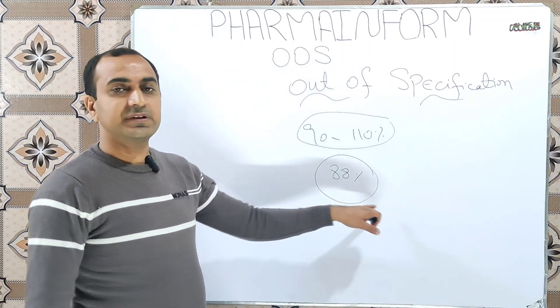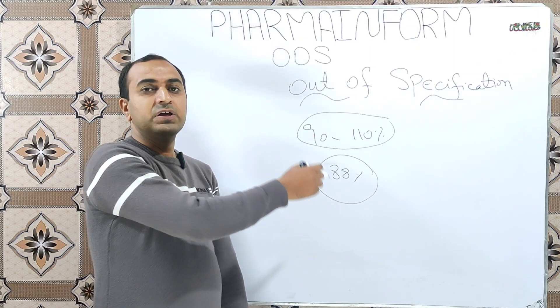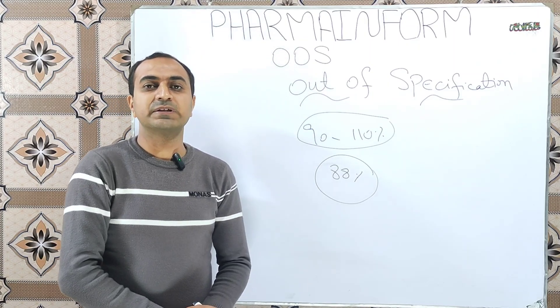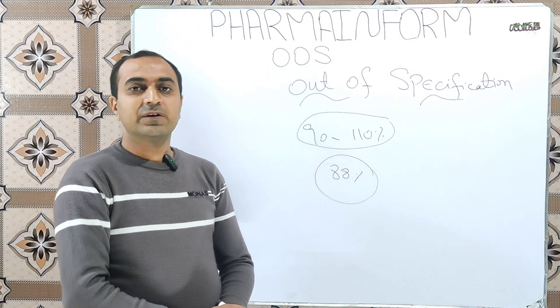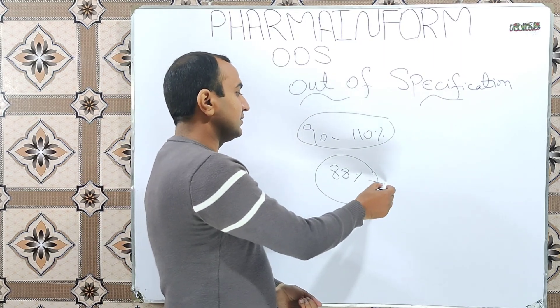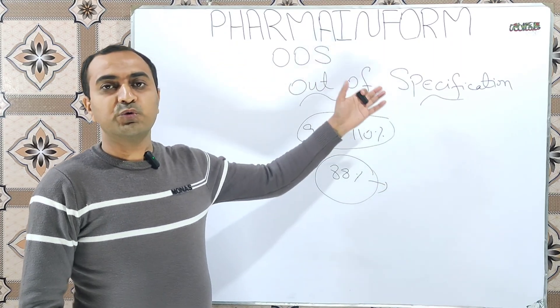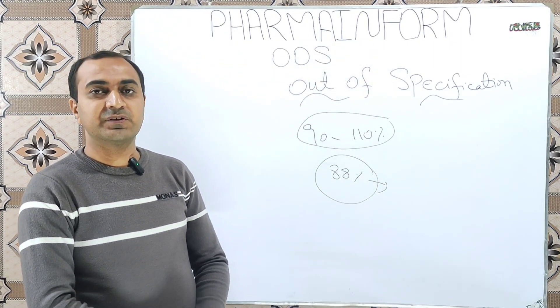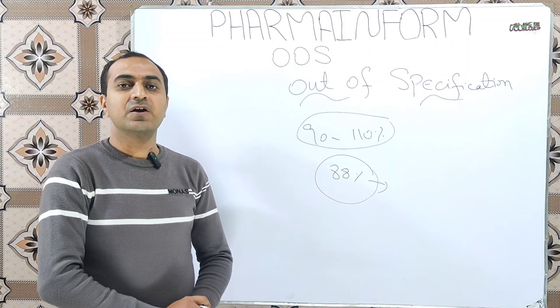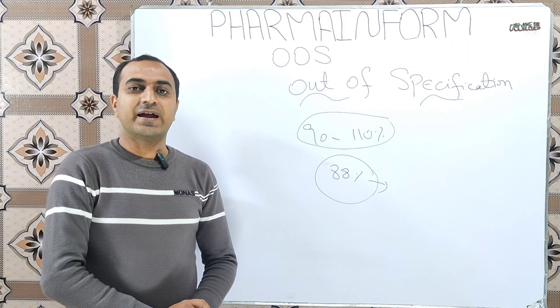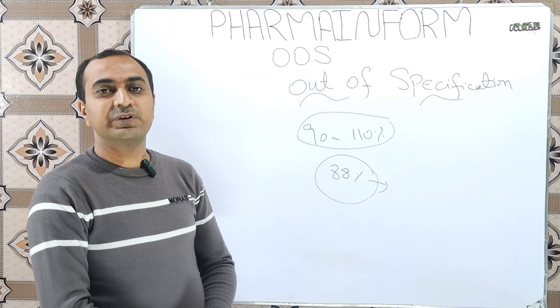Our result is 88 percent, so this result is not within the specified limits. So this product result is OOS or out of specification. We will perform an investigation for this OOS and we will follow phase one, phase two procedures for this, which we will record in a separate video.